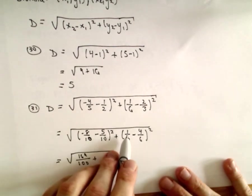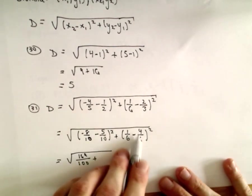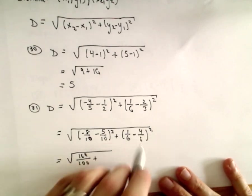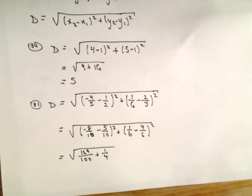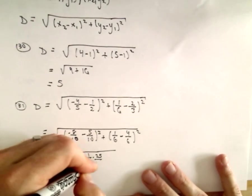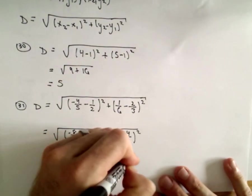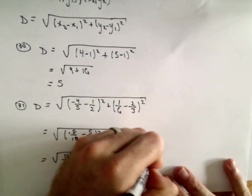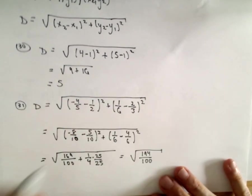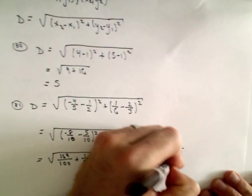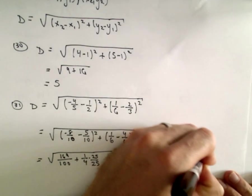Plus, let's see, if we do 1 sixth minus 4 sixth, that's 3 over 6. Negative 3 over 6 or negative 1 half. Negative 1 half squared will be positive 1 fourth. So again, we can get common denominators. We can multiply numerator and denominator by 25. So let's see, 169 plus 25, that's going to be 194 over 100. And of course, you could simplify this. You could make it the square root of 194 over the square root of 100. So in the denominator, you just have 10.